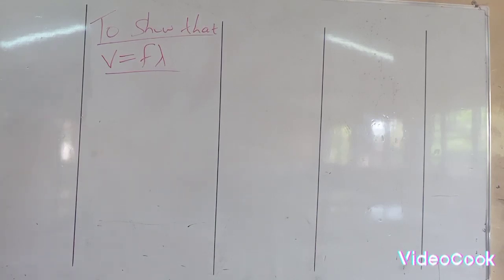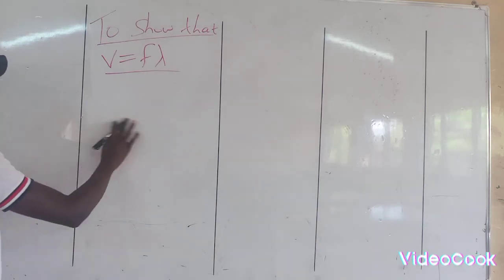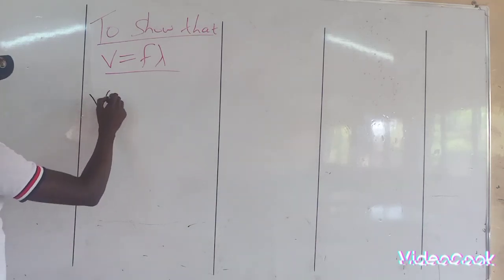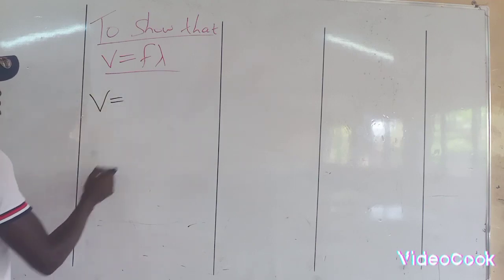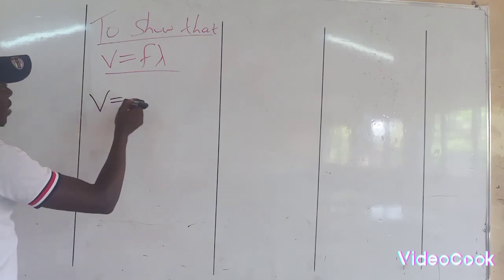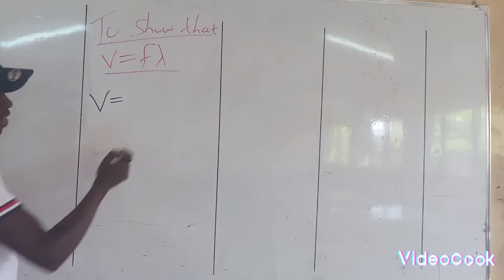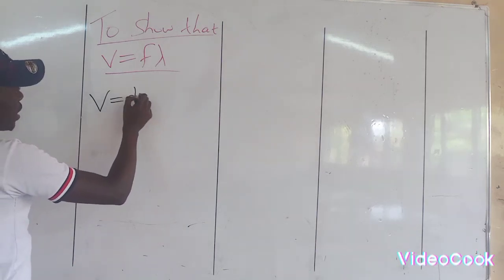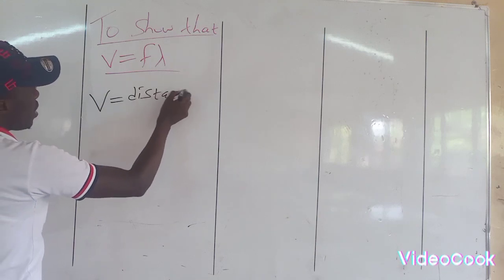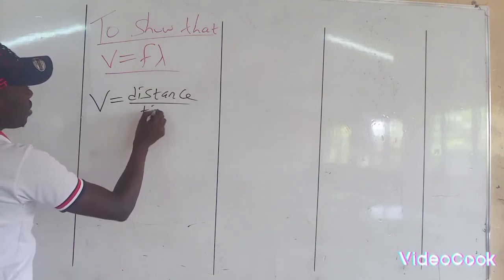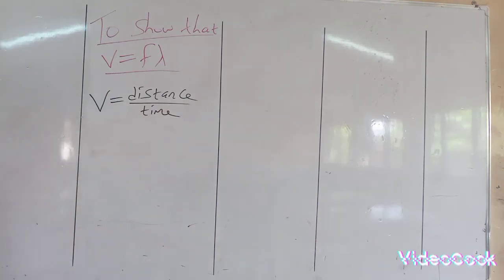We know from definition that velocity is given by displacement covered per unit time, or the distance covered per unit time. So we can say velocity equals distance per unit time, or displacement covered per unit time.